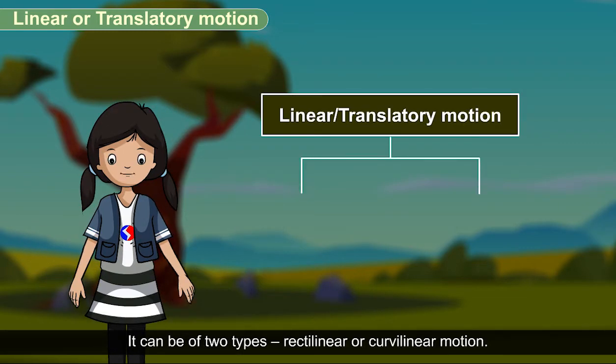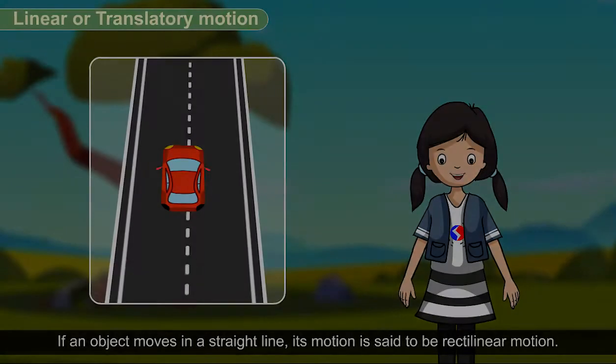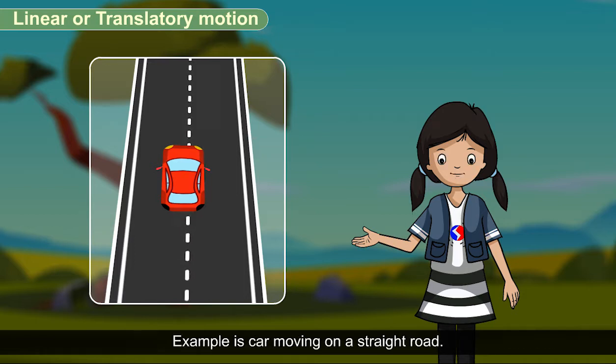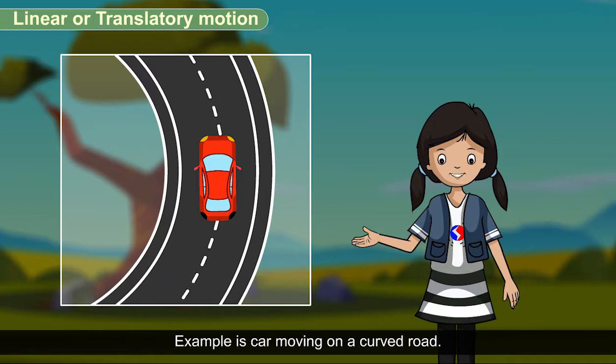It can be of two types: rectilineal motion or curvilineal motion. If an object moves in a straight line, its motion is said to be rectilineal motion. Example: a car moving on a straight road. If an object moves in a curved line, it has curvilineal motion. Example: a car moving on a curved road.